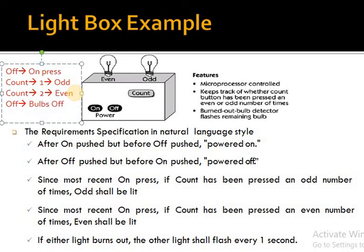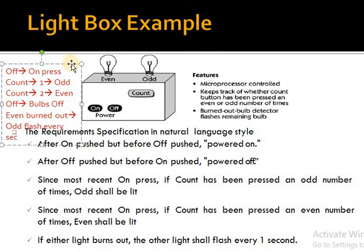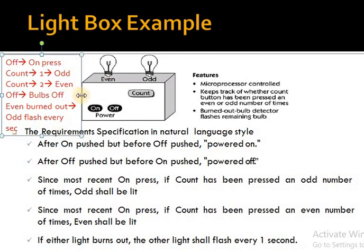If one bulb is damaged — for example, if the even bulb is burned out — then what happens is the odd bulb will flash every second. Every second after the even bulb burns out, the odd bulb will flash. This is the requirement specification for the light box.